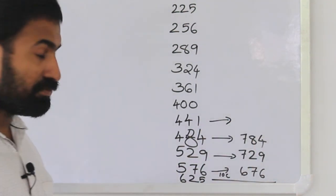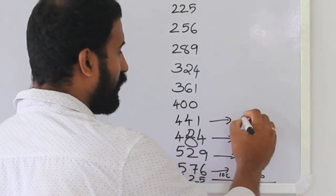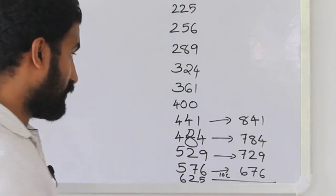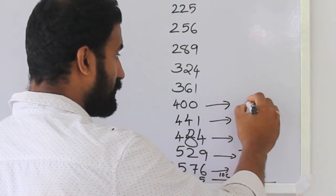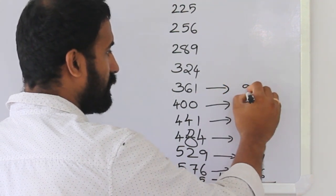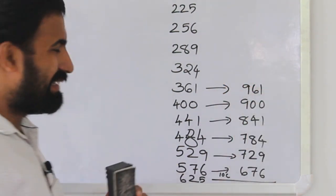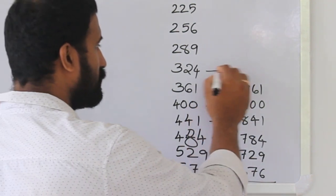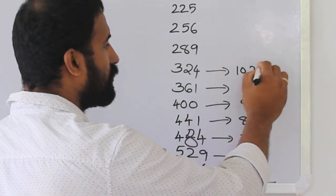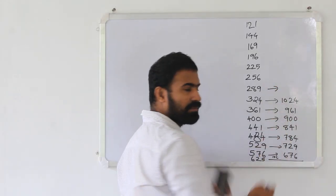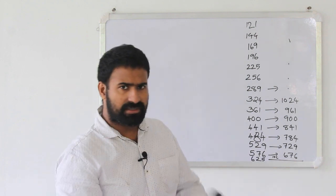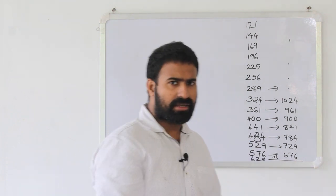21 and 29: 441 and 841, the difference is 400. 20 and 30, the difference is 505. 90 and 31, the difference is 600. Then 341, the difference is 504, difference is 755.